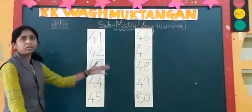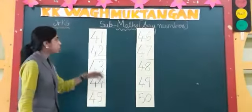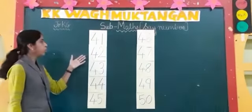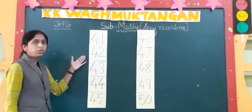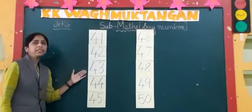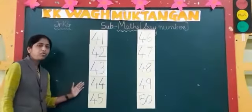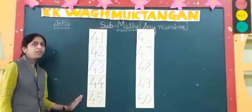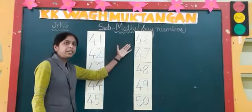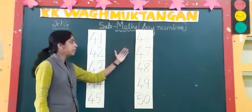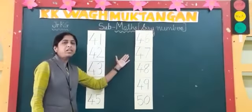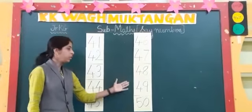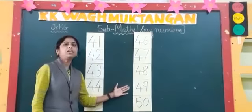So here are the numbers. Our first number is 40 and 1 — 41. 40 and 2 — 42. 40 and 3 — 43. 40 and 4 — 44. 40 and 5 — 45. 40 and 6 — 46. 40 and 7 — 47. 40 and 8 — 48. 40 and 9 — 49.